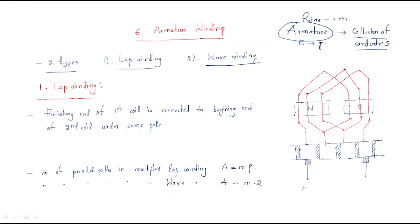If you observe the diagram, these are the brushes, this is the commutator, and this is the insulation. These parts are the commutator segments. For a two-pole machine, the armature has a north pole and a south pole arranged accordingly.